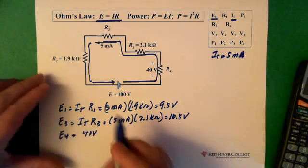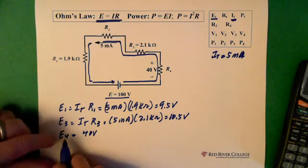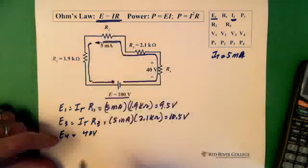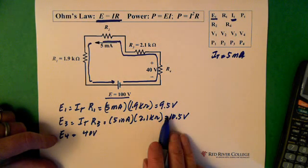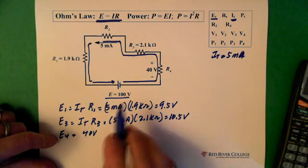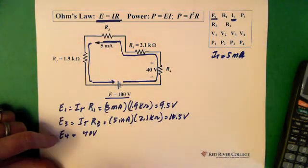And we know that E4 is 40 volts. Now since we know that the total voltage is 100 volts, we can solve for E2, so the voltage across this resistor, by subtracting all of these voltages from the total voltage. Because the sum of all of these voltages must be 100 volts.